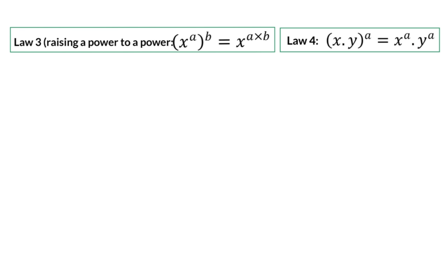Law 3 states that when you have one base with two exponents, you can multiply those two exponents with each other. Here we have 3 to the power of 3 to the power of 4, and according to the law, we keep the base the same and multiply the exponents, and 3 times 4 is 12. This means that here we have 12 threes that should be multiplied.